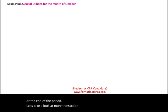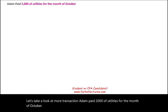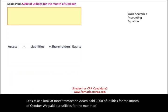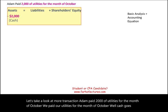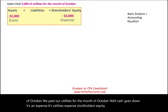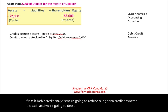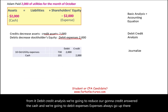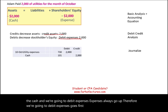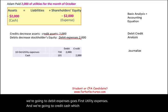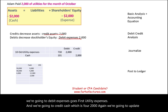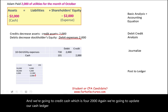Transaction 9: Adam paid $2,000 of utilities for the month of October. Cash goes down; it's an expense — utilities expense — so stockholders' equity goes down as well. We credit cash $2,000 and debit utilities expense $2,000. After posting, cash goes down $2,000 and we have a utilities expense balance of $2,000.